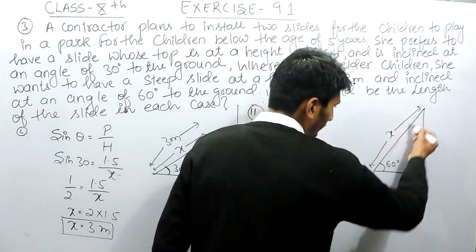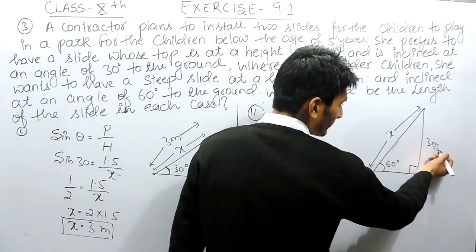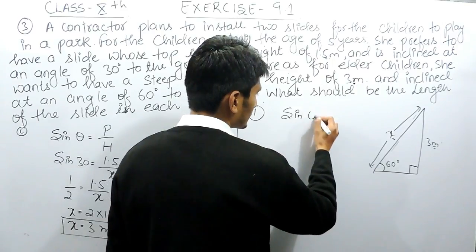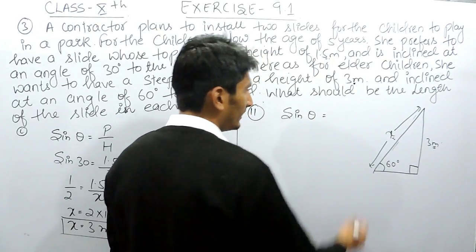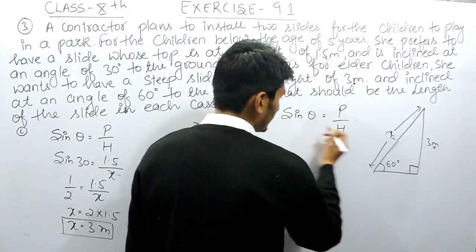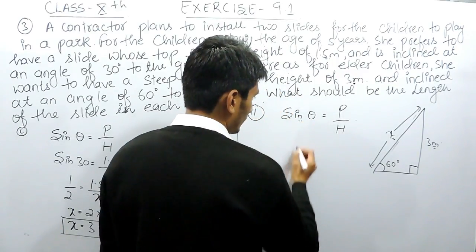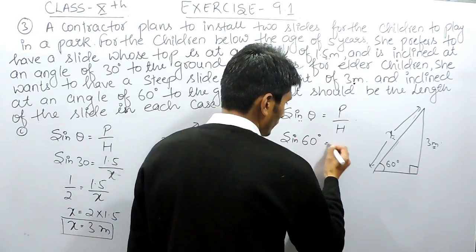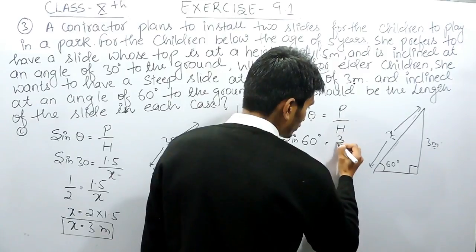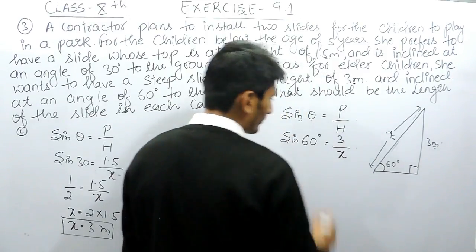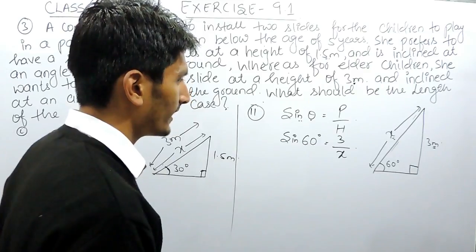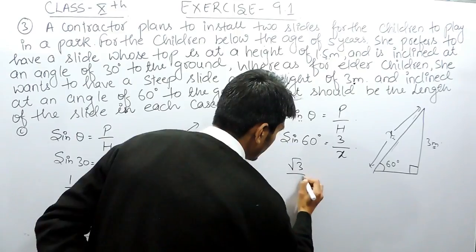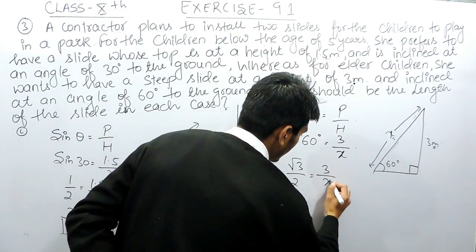In the second case, we again need to find the length of the slide. The perpendicular is given and we have to find the hypotenuse. We use sine theta equals perpendicular upon hypotenuse. Here theta is 60 degrees, perpendicular is 3 meters, hypotenuse is x, and the value of sine 60 is root 3 by 2. So root 3 by 2 equals 3 upon x.